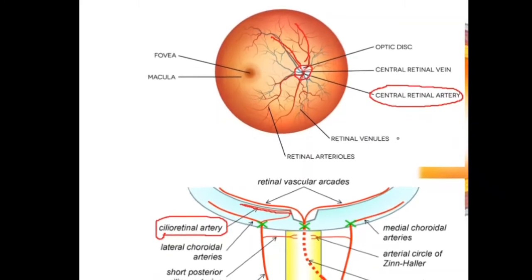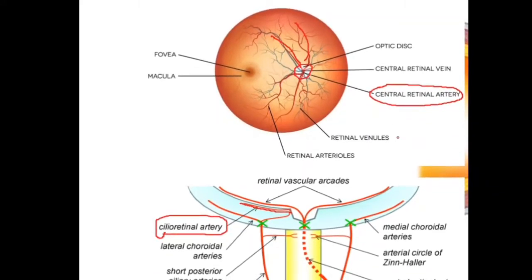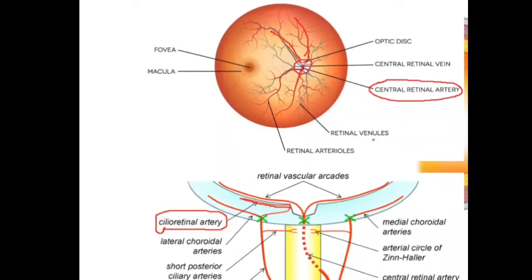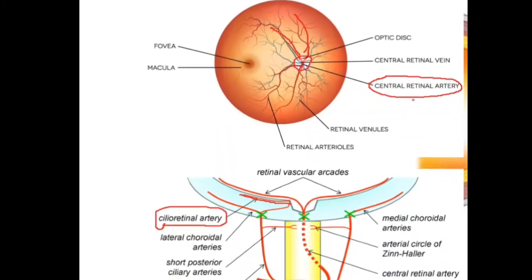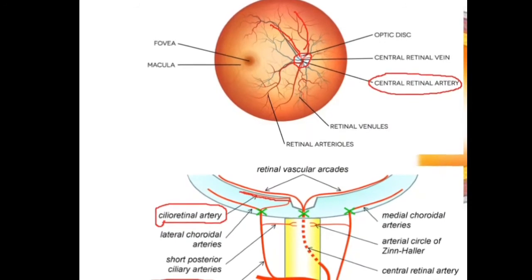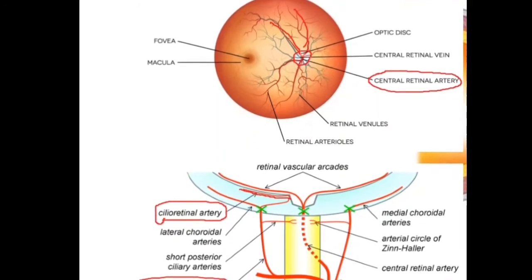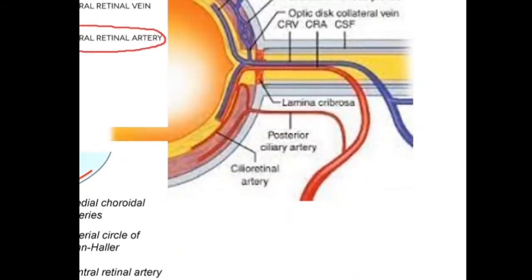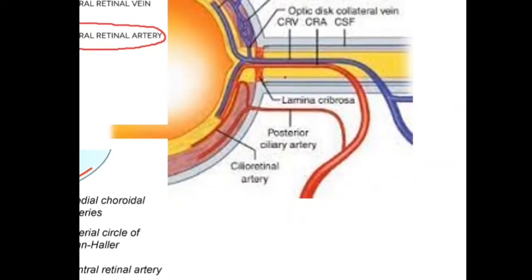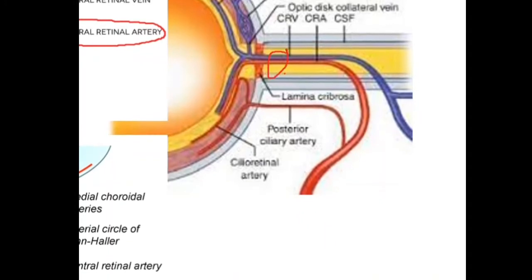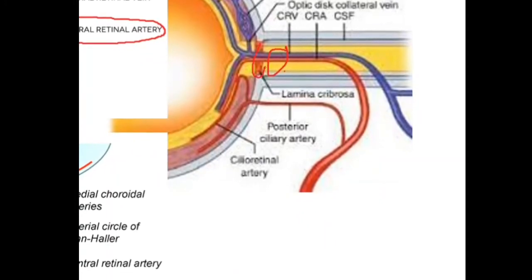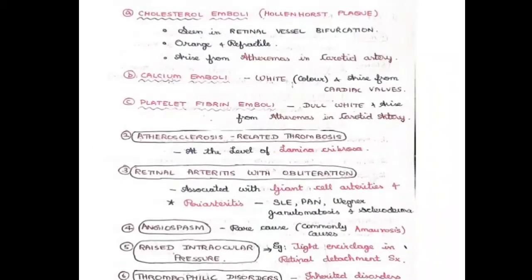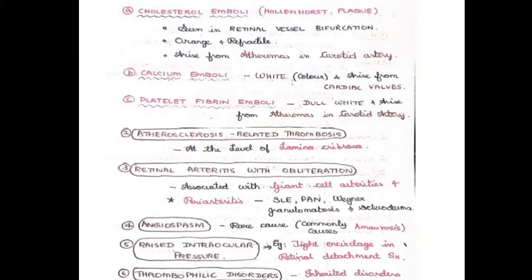The optic disc is the region through which all retinal vessels and the optic nerve enter and exit. Covering this region is the lamina cribrosa, a sieve-like structure that acts as an entry and exit route for nerves and vessels. You can clearly see the lamina cribrosa through which the optic nerve, central retinal artery, and central retinal vein pass.